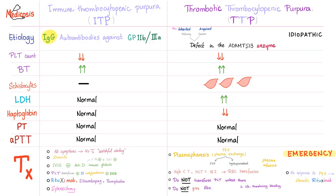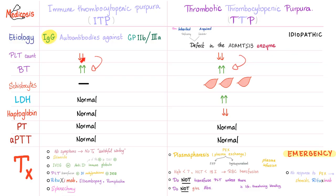So what's the difference between ITP and TTP? Etiology is different — in ITP we have IgG antibodies against GP2B3A, which will inhibit platelet aggregation. In TTP we have a defect in the ADAMTS-13 enzyme. This defect could be a deficiency of the enzyme, called inherited TTP, or the amount of the enzyme could be fine but we have an inhibitor to the enzyme, called acquired TTP. Platelet count is low in both — the name literally has thrombocytopenia. Bleeding time is high because the platelet count is low, so the function is low and bleeding time is prolonged.